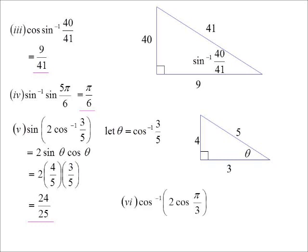The inverse cos of 2 cos pi on 3. Unfortunately we don't have an inverse cos 2 theta result. However, we do know what the cosine of pi on 3 is exactly. So we can work out this 2 times cosine pi on 3. So it's really asking me, what is the inverse cos of 1? Which is just 0.